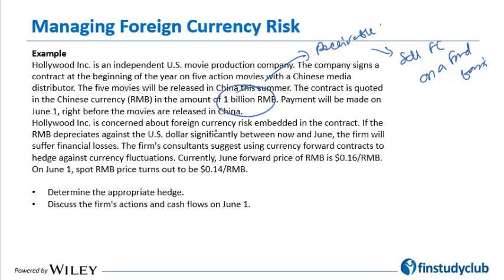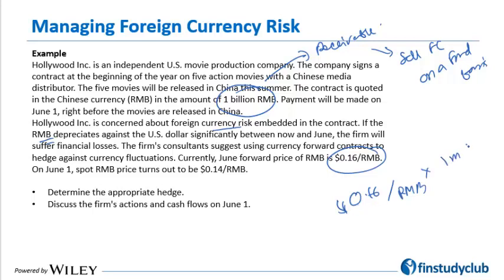Hollywood is concerned about foreign currency risk. The concern is: what if RMB depreciates against the U.S. dollar and 1 billion RMB fetches a lower amount of U.S. dollars? The firm's consultants suggest using currency forward contracts to hedge. Currently the forward RMB is quoted at 0.16 dollar per RMB. If Hollywood locks in this rate, 1 billion RMB would translate into 0.16 billion dollars, which is 160 million dollars.